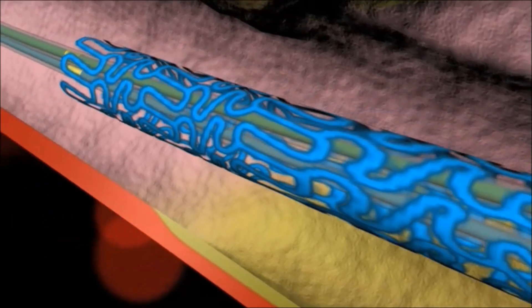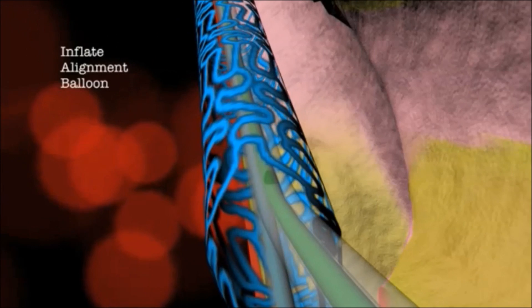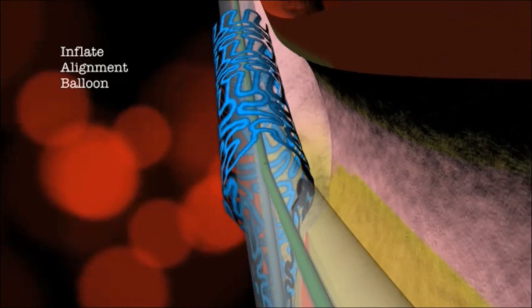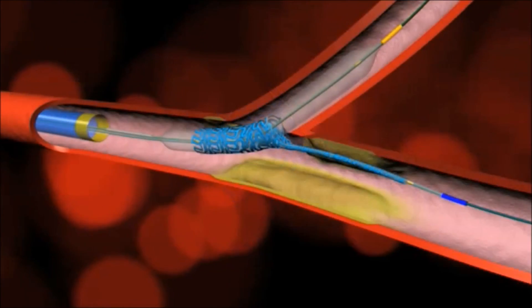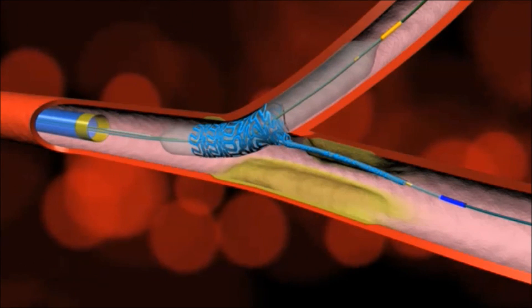Proximal segment of the mother stent is then deployed first with inflation of the daughter balloon. Note perfect alignment of the stent and coverage of the tissue into the ostium of the side branch.